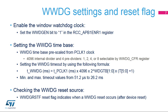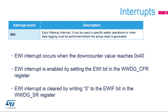Once the window watchdog generates a reset, a status flag WWDGRSTF is set in the RCC_CSR register, identifying the source of the reset. The early wake-up interrupt can be used for specific safety operations, or when data logging must be performed before the actual reset is generated. The EWI interrupt occurs whenever the down-counter value reaches 0x40. It is enabled by setting the EWI bit in the WWDG_CFR register.